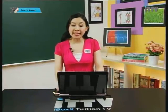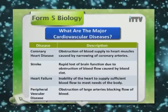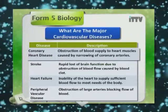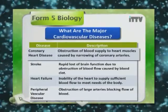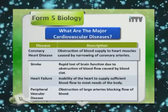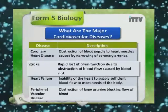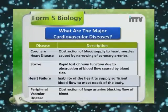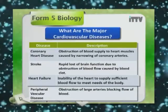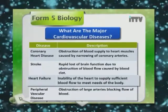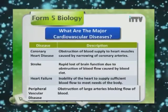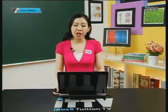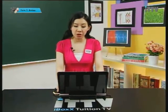What are the major cardiovascular diseases? There are four major cardiovascular diseases shown in the diagram. The first is coronary heart disease, whereby there is obstruction of blood supply to the heart muscle caused by narrowing of coronary arteries. Secondly, stroke, whereby there is rapid loss of brain function due to obstruction of blood flow caused by a blood clot. Thirdly, heart failure, which is the inability of the heart to supply sufficient blood flow to meet the body's needs. Fourthly, peripheral vascular disease, which is the obstruction of large arteries blocking flow of blood.